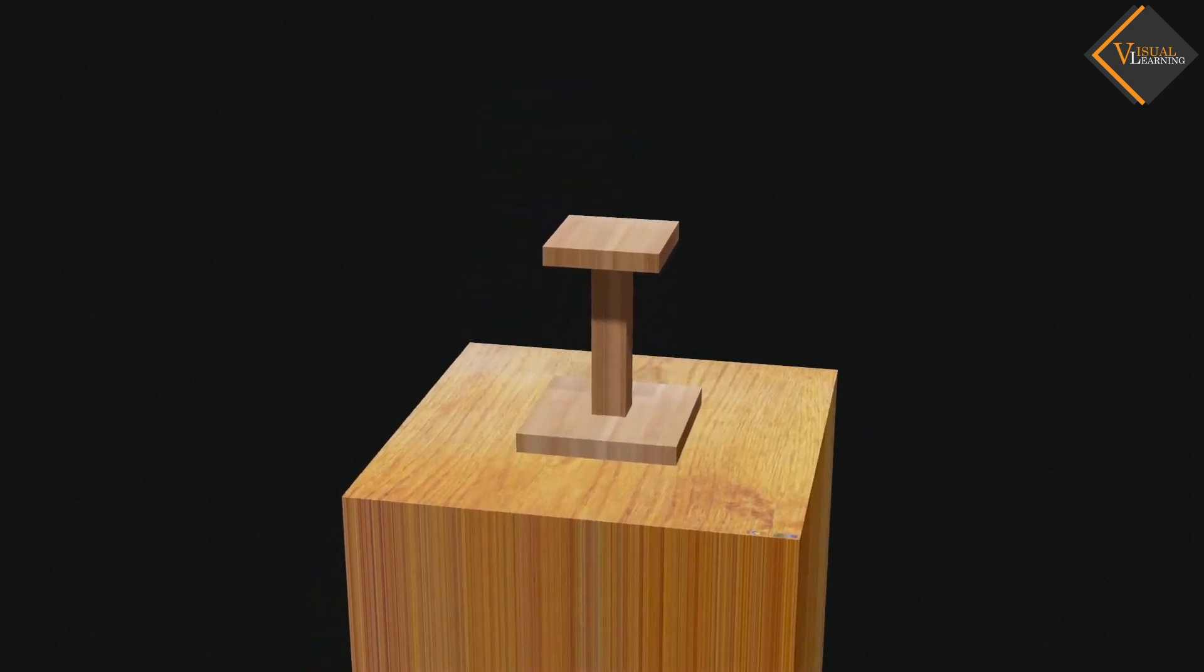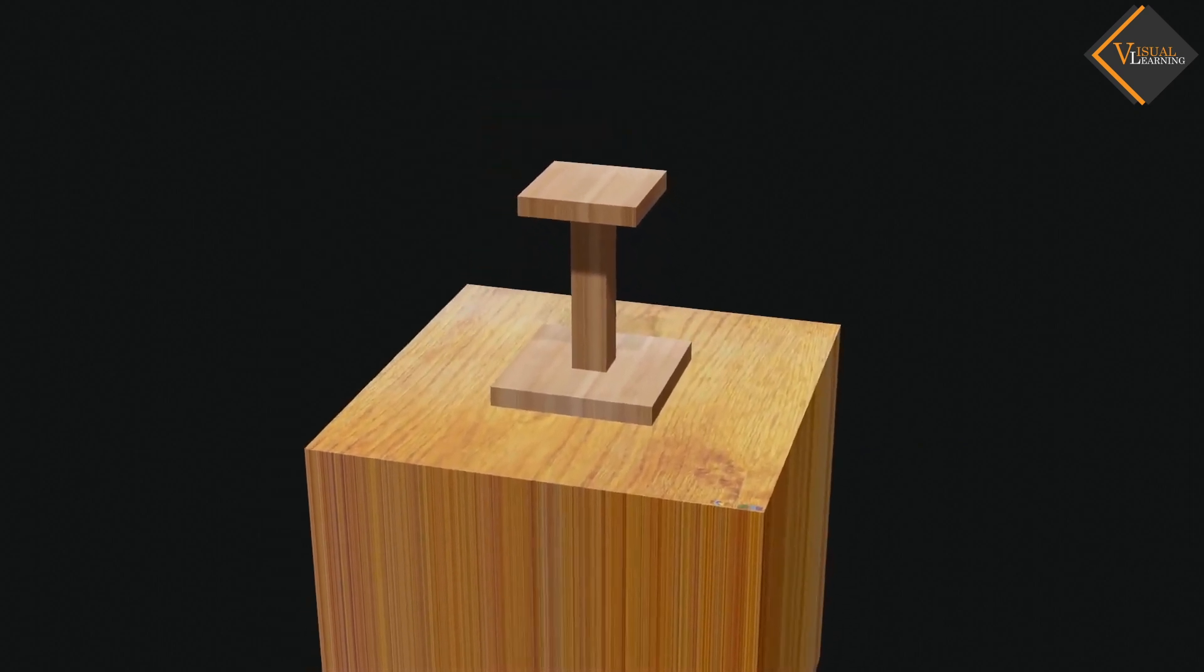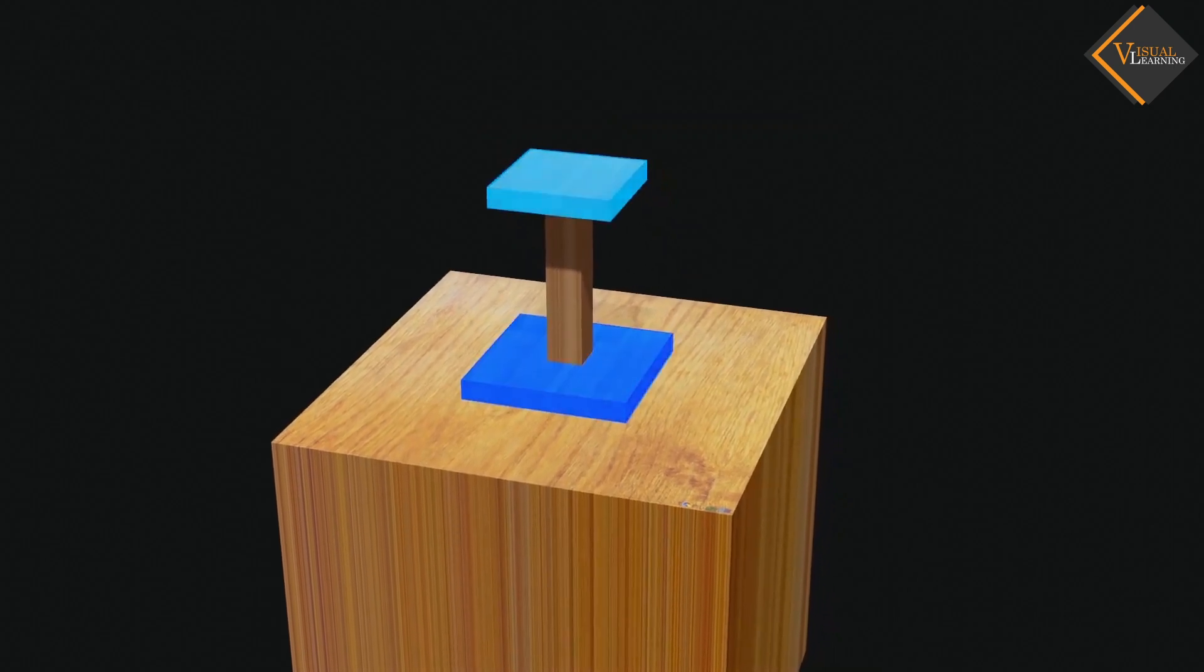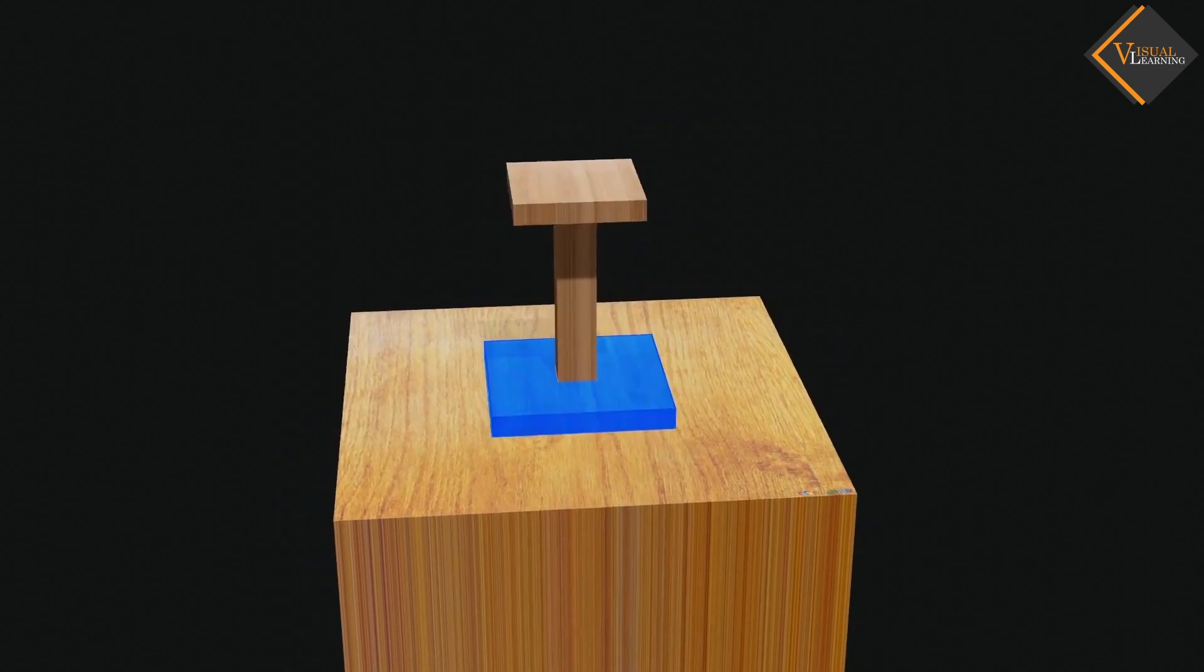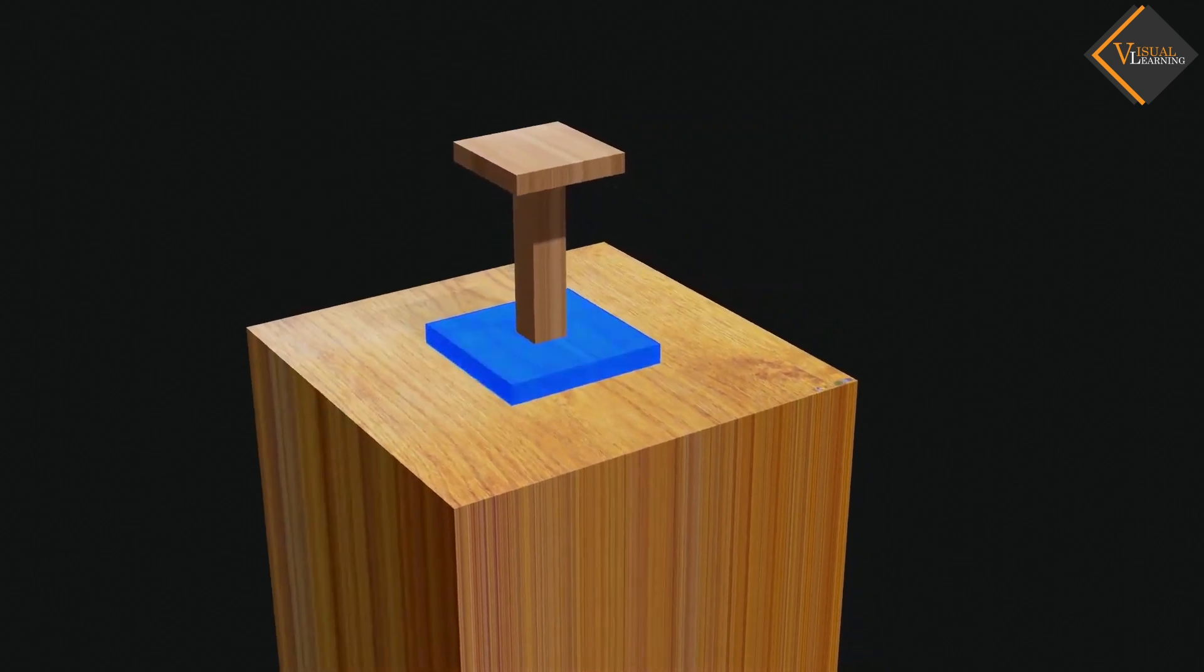We can see that this wooden object has different surface areas at the top and the bottom. The bottom surface area is greater than the surface area of the top.